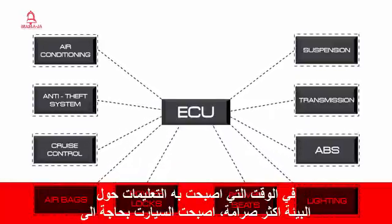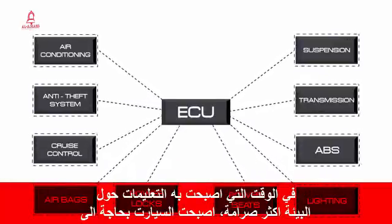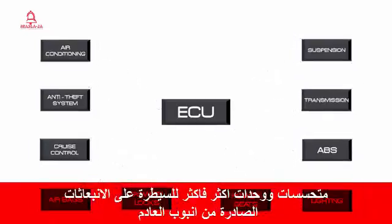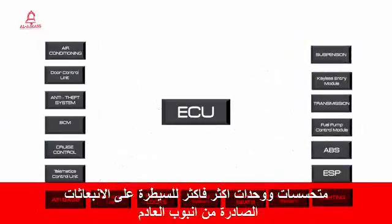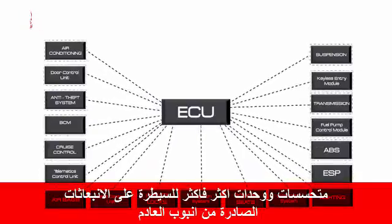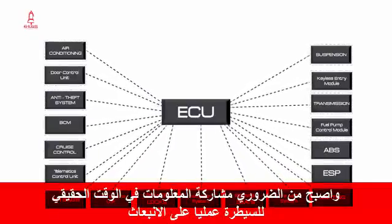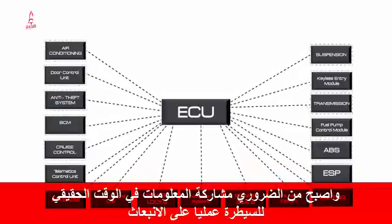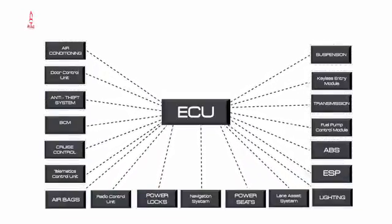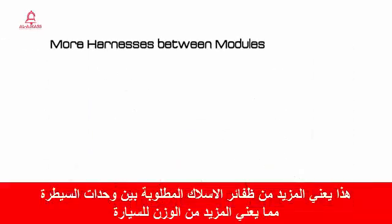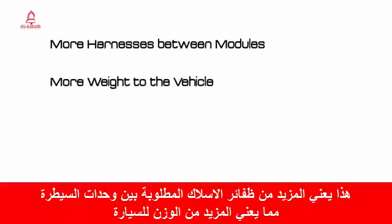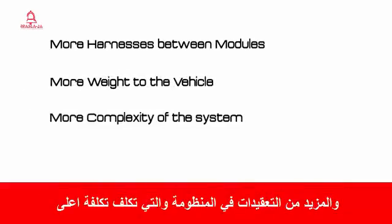However, as environment regulations got stricter, vehicles were required to have more and more sensors and modules to control emissions from exhaust parts. They needed to share information in real-time to effectively control emissions. This meant more wire harnesses were required between modules, adding much more weight to the car, more complexity to the system, and eventually higher cost.